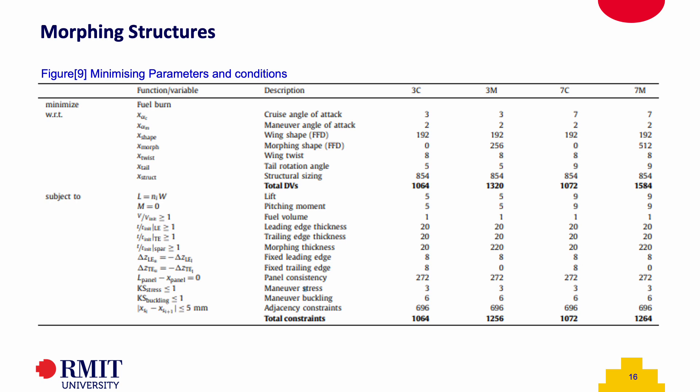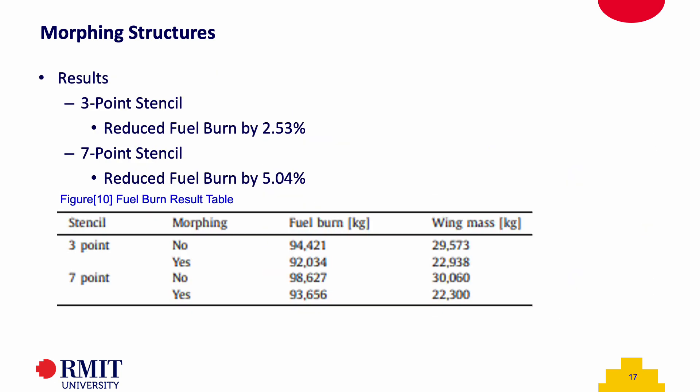On this slide, we can see what the morphing structure aims to minimize. It aims to minimize fuel burn with 3-point stencil and 7-point stencil, with morphing and without morphing, showing a comparison of each parameter along the flight. From the results of the morphing structure simulation, the 3-point stencil reduces fuel burn by 2.53% and the 7-point stencil reduces fuel burn by 5.04%. The table below shows the fuel burn and wing mass for the 3-point and 7-point stencil conditions with and without morphing. In the 7-point stencil, the fuel burn reduction is more than the 3-point stencil because there are more flight conditions that the structure can adapt to, therefore reducing more fuel.